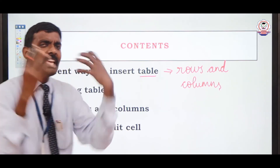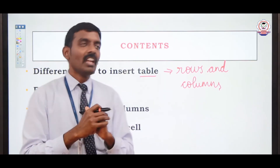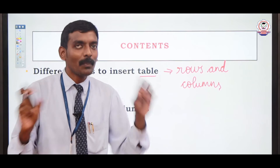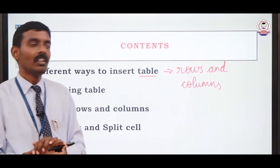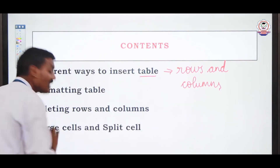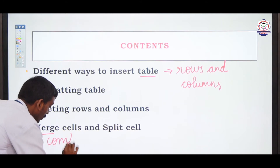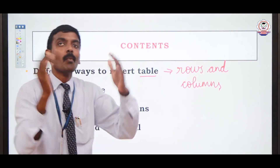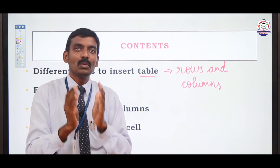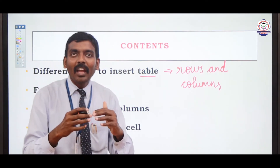And formatting the table — what is the meaning of formatting the table? We want to design the table header, table footer, or table structure. That is called formatting the table. And deleting the table, and deleting rows and columns — we can delete a single row or multiple rows, or a single column or multiple columns. And merge cells — merge means combine, group, or join. You can merge two or more cells into a single cell. And split cell — a single cell can be divided into two or more cells, either horizontally or vertically. These concepts will be explained practically.